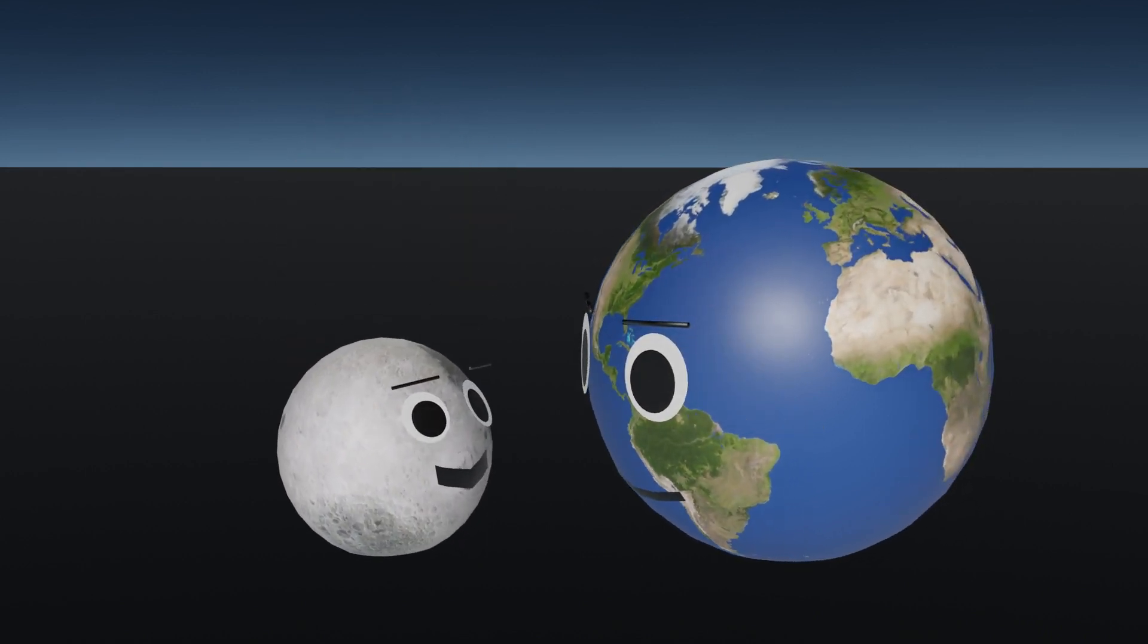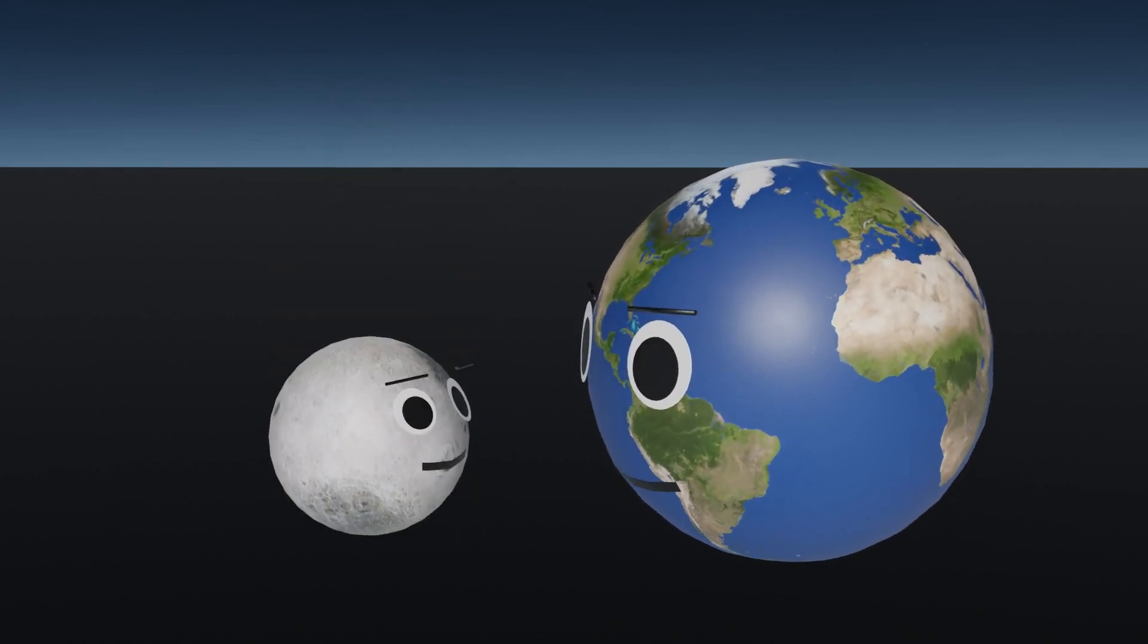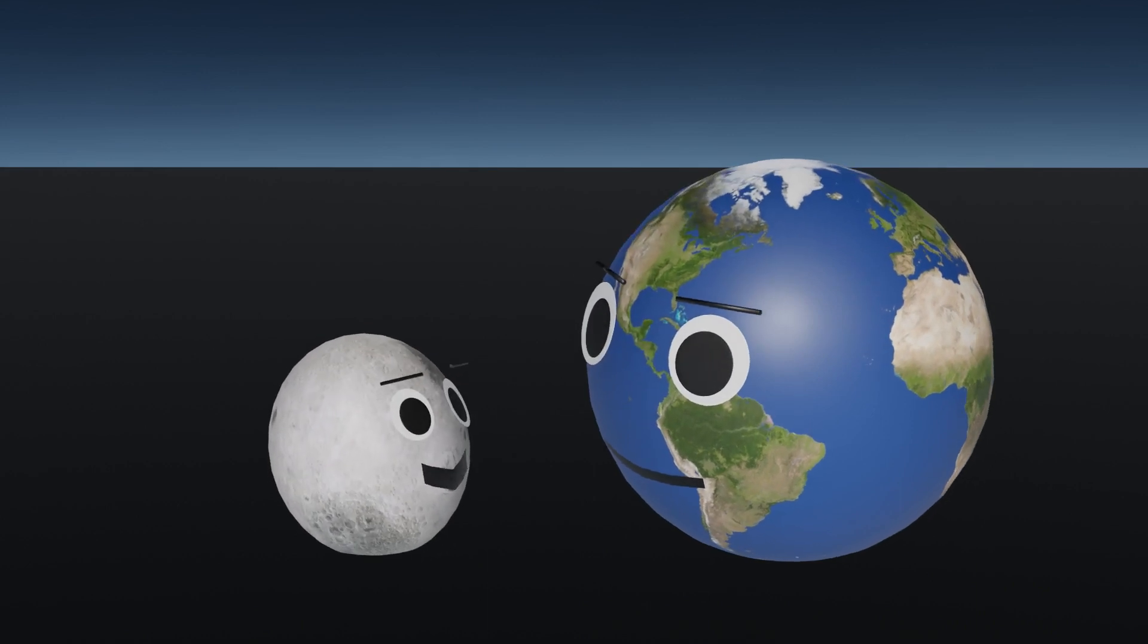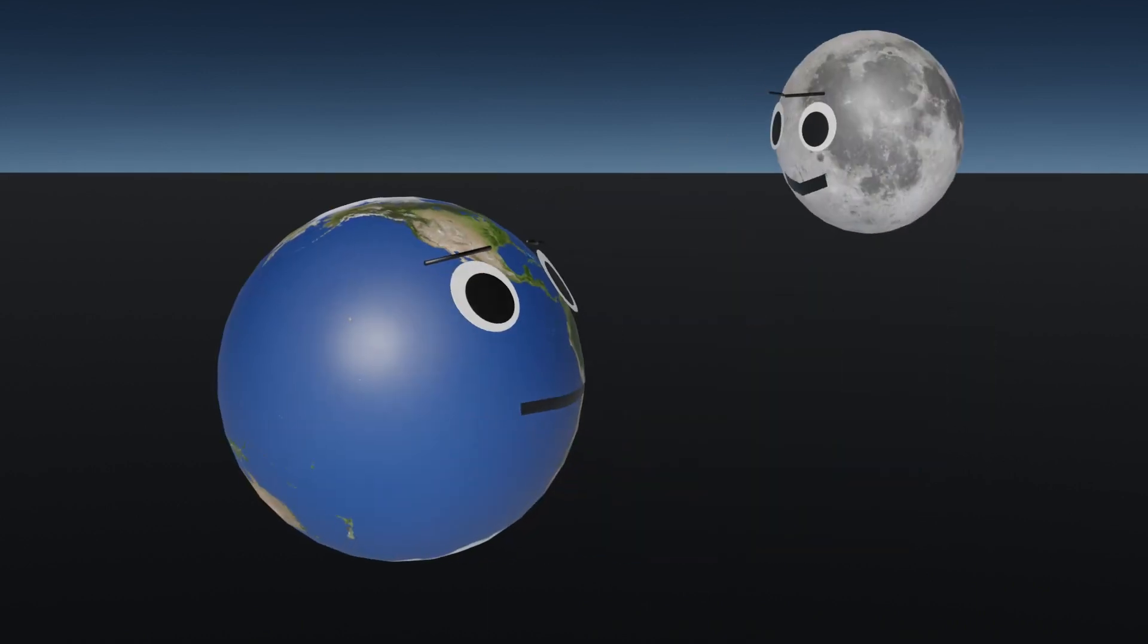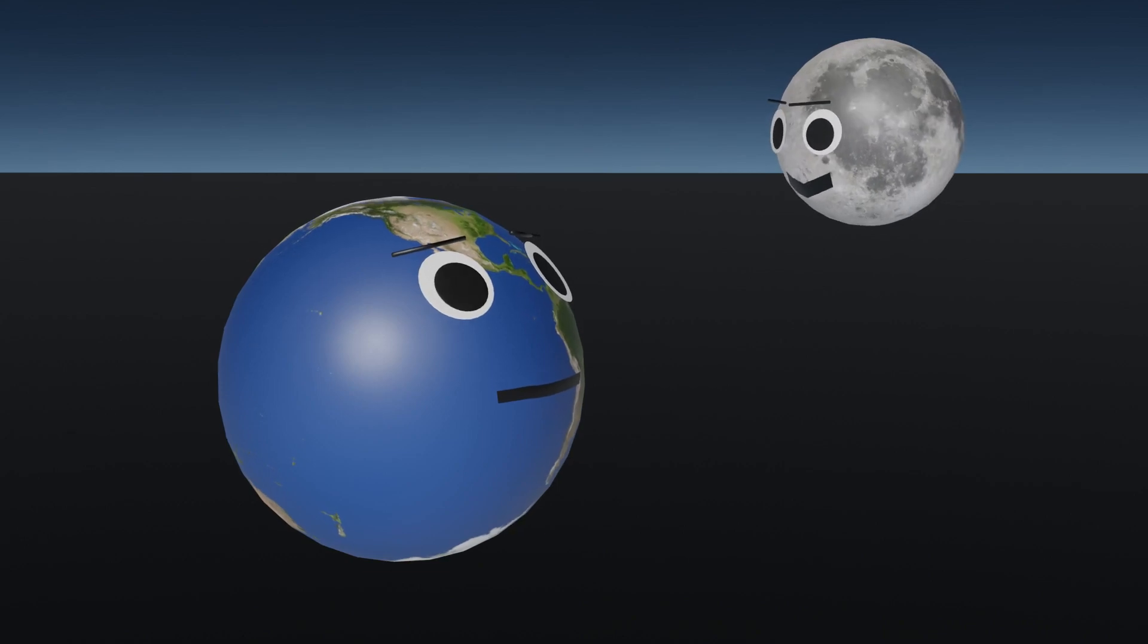Jupiter is out of your league. Let me explain. Jupiter is 11 times wider than Earth. It has a radius of 43,440 miles.